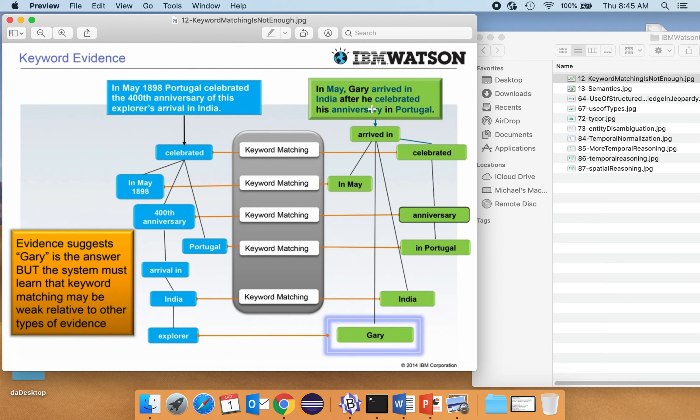So on the surface there are a lot of similarities, right? There's arrival and arrived in, there's celebrated and celebrated, we're talking about May, we're talking about anniversaries, we're talking about Portugal, we're talking about India, and perhaps Gary is even an explorer. So if we just use keyword matching this is a pretty good match, but you know as you might guess, not really what we're after.